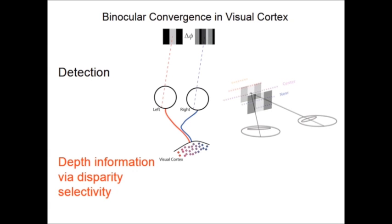Binocularity is a property of neurons that provides us information about depth of objects in the world. Because of the difference in position of the two eyes in the head, each eye has a slightly different viewpoint. Depending on where the stimulus is located, there will be a spatial offset between the two retinal images. This offset is what we call disparity.